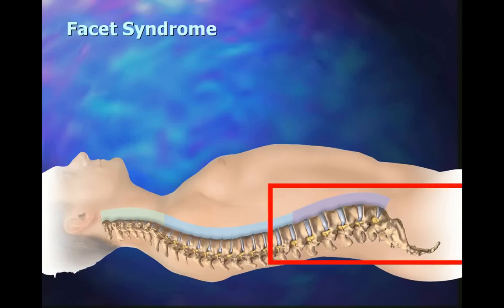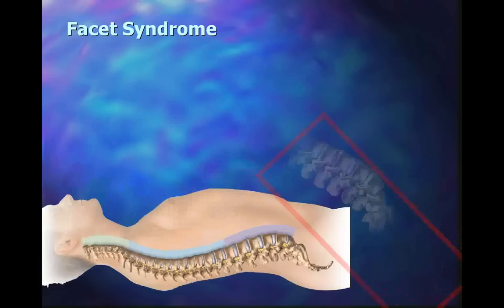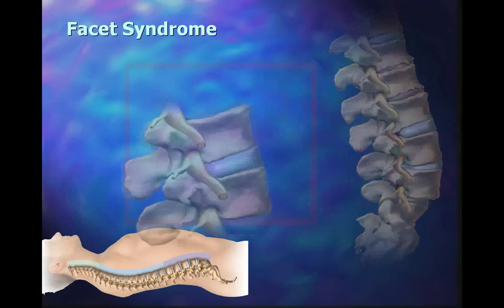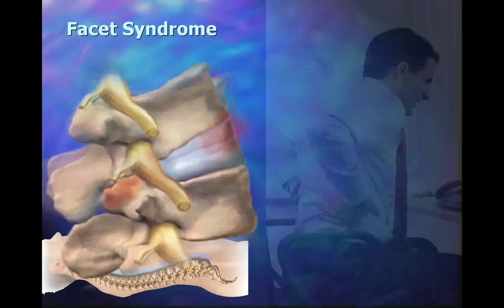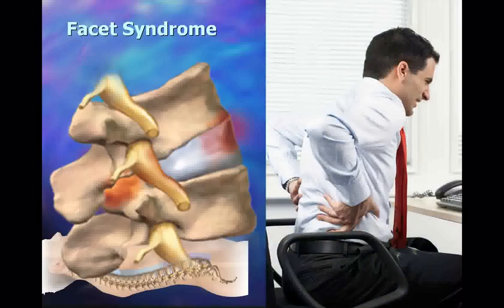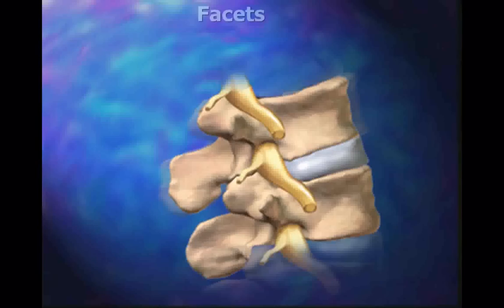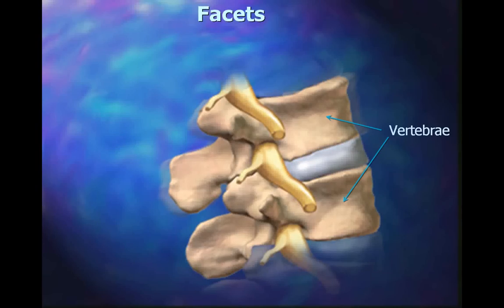Facet Syndrome of the low back occurs when the joints of the vertebrae in your lower spine are not gliding smoothly. Those joints get fixated or their alignment becomes restricted, affecting mobility of, and often causing, pain in the low back. The facets, or joints of the vertebrae, interconnect each vertebra to one another. A facet is a small smooth area on the vertebrae. When two facets touch on a vertebra, they form a Facet Joint.